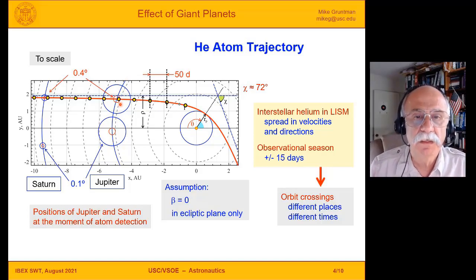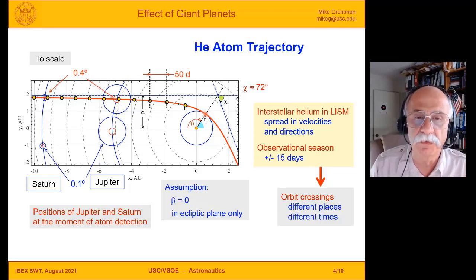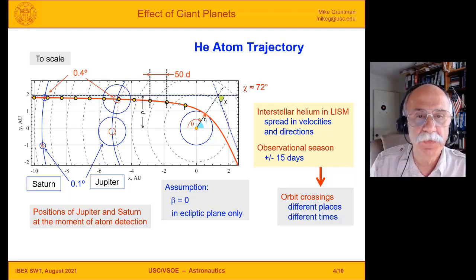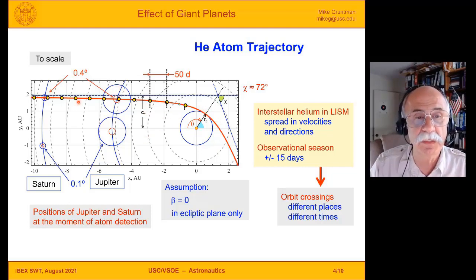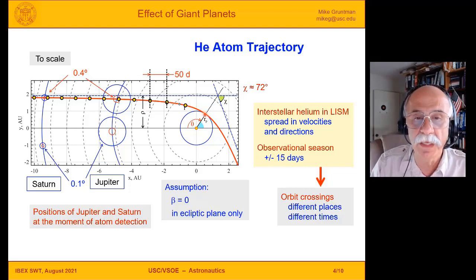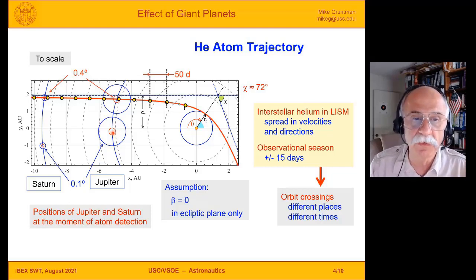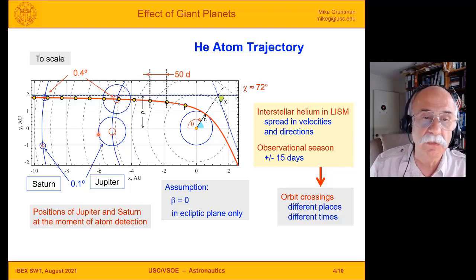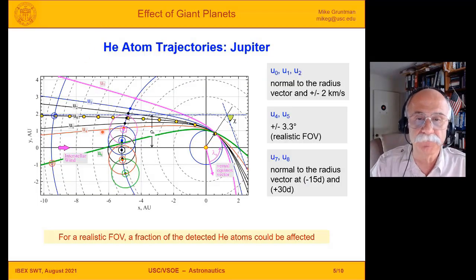I found it very convenient to reduce everything to the following: if I detect helium atoms with a certain velocity coming from a certain direction at a certain point at the orbit of the Earth, I ask myself where Jupiter was during the moment of detection — accounting for the time of flight from the orbit. For the nominal trajectory, Jupiter would be right here. If at the moment of detection Jupiter was within the red circle, the atom trajectory was affected by 0.4 degrees or higher; if within the blue circle, it was affected by 0.1 degree or higher.